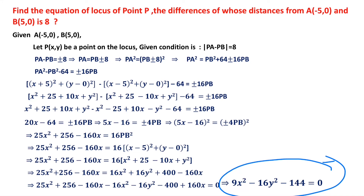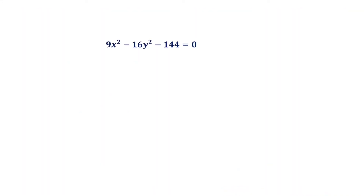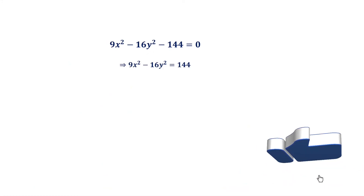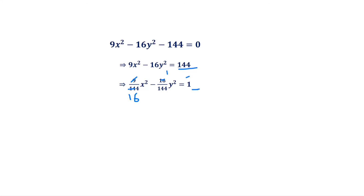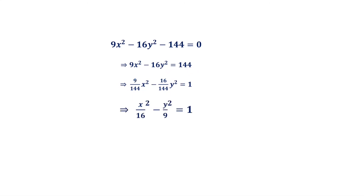Transposing -144 to the right-hand side: 9x² - 16y² = 144. Dividing both sides by 144: 9x²/144 - 16y²/144 = 1, which simplifies to x²/16 - y²/9 = 1. This is the equation of the locus.